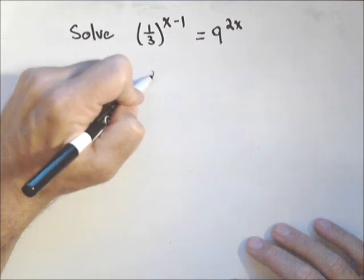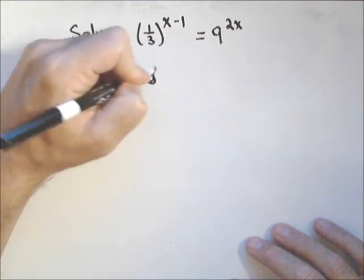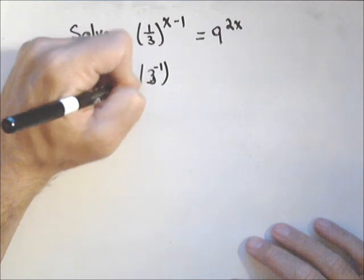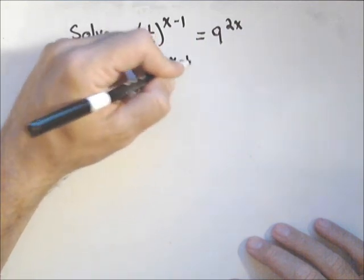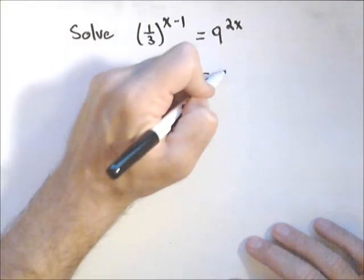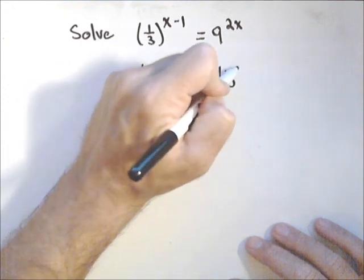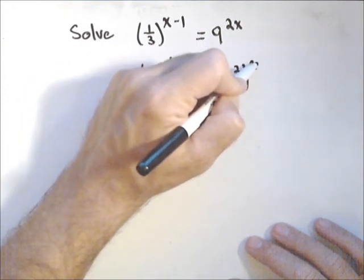One third, remember, is 3 to the negative 1, then to the x minus 1. 9 is 3 squared to the 2x.